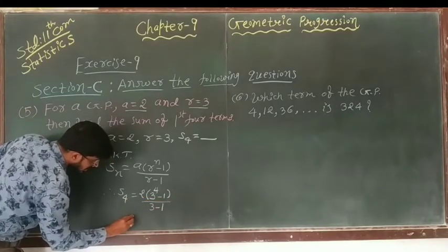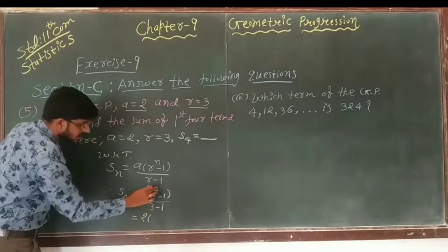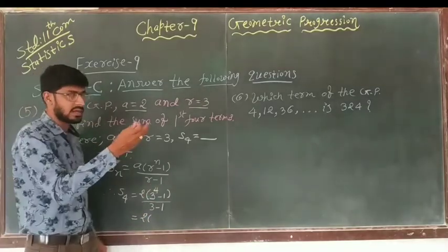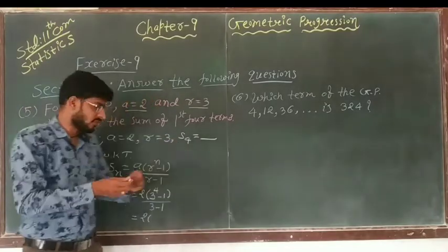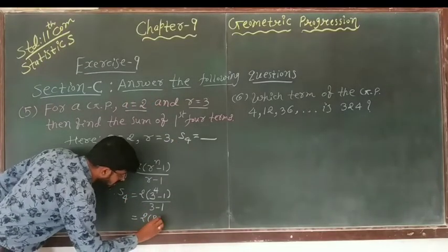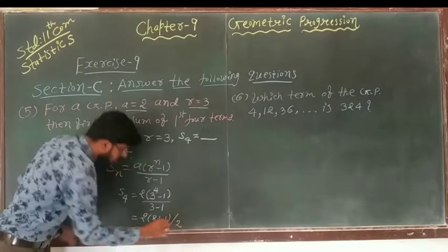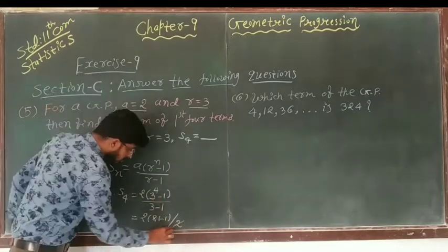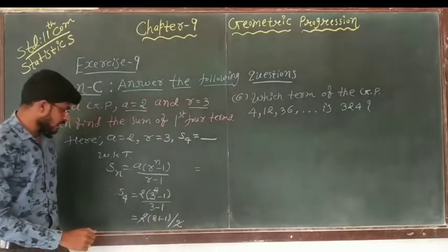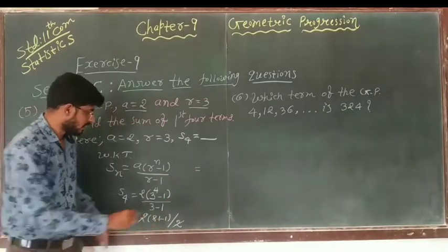That gives us 3 minus 1 in the denominator, so we have 2 multiplied by (3 raised to 4 minus 1) upon 2. Now 3 raised to 4 equals 81, so this becomes 81 minus 1 upon 2. Cancelling, we get 81 minus 1 equals 80. So S4 equals 80.